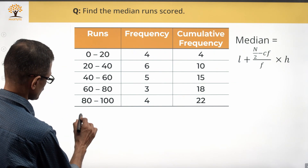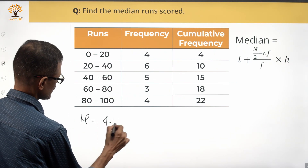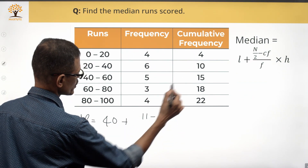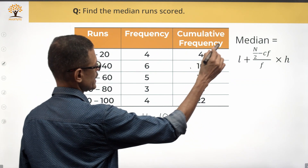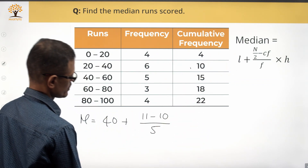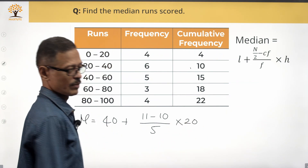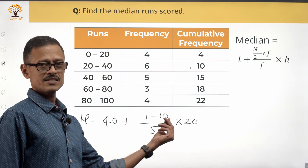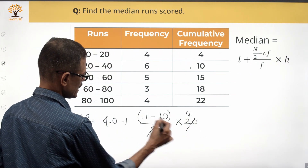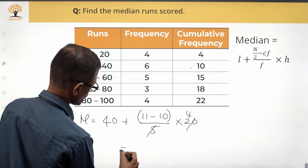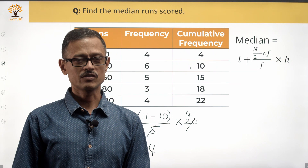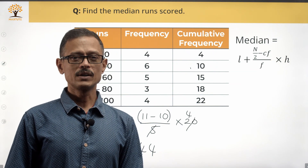Median = 40 + [(11 − 10) / 5] × 20. That gives us 40 + [1/5] × 20. The 5 cancels with 20 to leave 4, so 1 × 4 = 4. Therefore, 40 + 4 = 44. The median runs scored in this tournament is equal to 44.